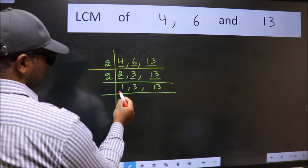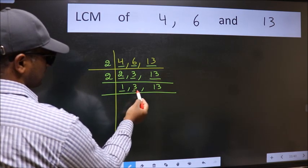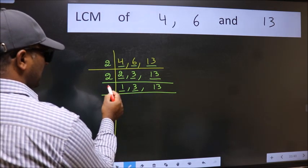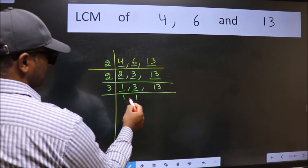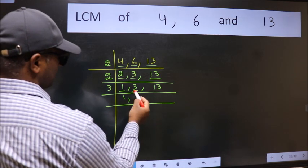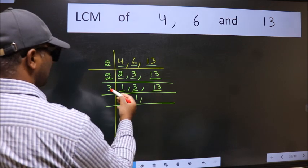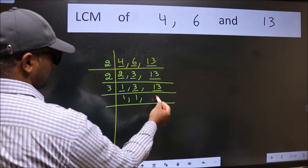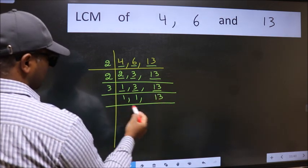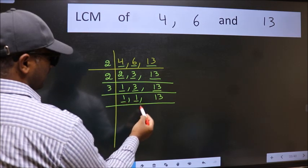Now we got 1 here. So focus on the next number 3. 3 is a prime number. So 3 wants 3. The other number 13, not divisible by 3. So we write it down as it is. Now we got 1 here and here.